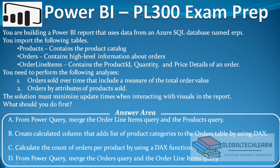The available options are: Option A - from Power Query, merge the Order Line Items query and the Products query. Option B - create a calculated column that adds a list of product categories to the order table using DAX. Option C - calculate the count of orders per product using a DAX function. Option D - from Power Query, merge the Orders query and the Order Line Items queries.